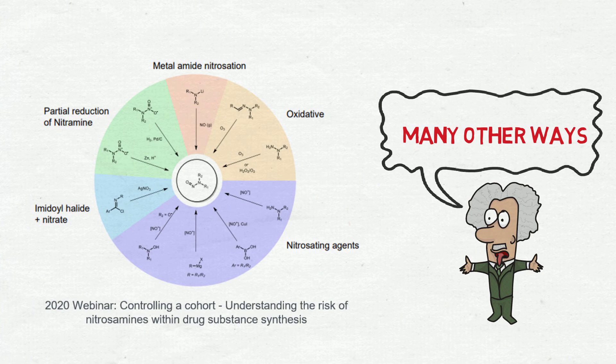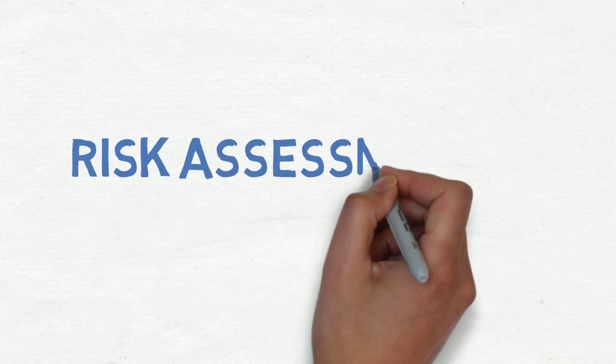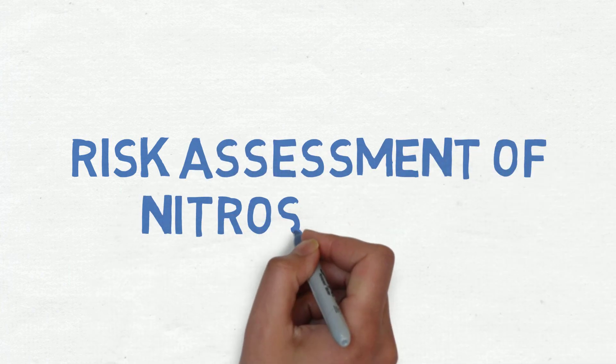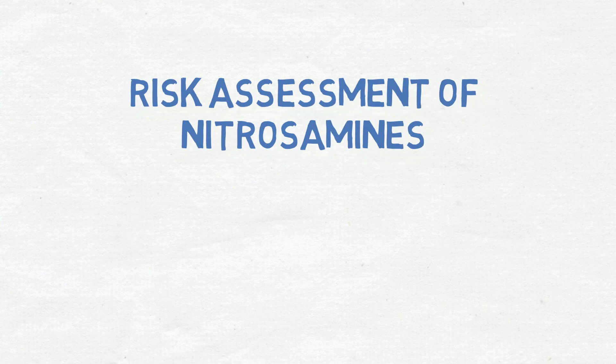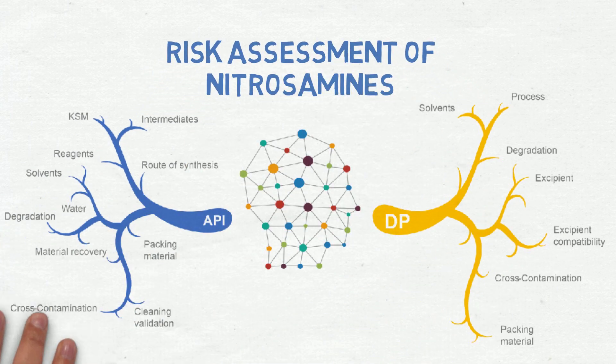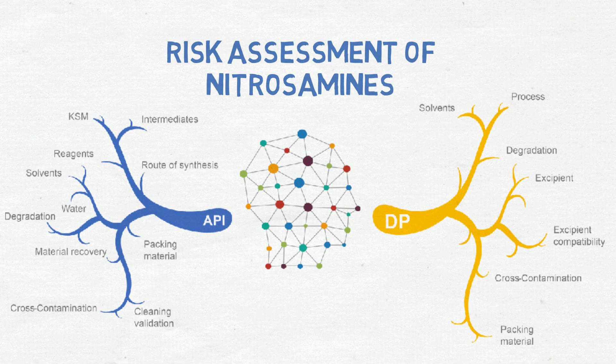Then, considering all the chemistry behind nitrosamines and all the possibilities to perform the risk assessment of nitrosamines, it is really important to understand in depth organic chemistry, because you have a lot of details that you have to be aware of to perform a robust risk assessment of nitrosamines.